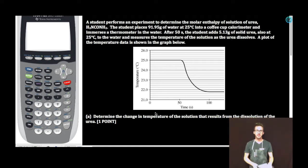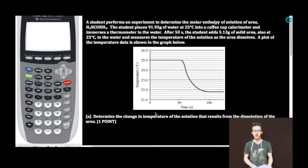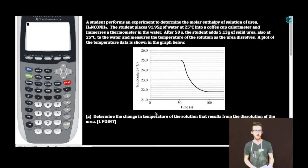A student performs an experiment to determine the molar enthalpy of solution of urea. The student places 91.95 grams of water at 25 degrees Celsius into a coffee cup calorimeter and immerses a thermometer in the water. After 50 seconds, the student adds 5.13 grams of solid urea, also at 25 degrees Celsius, to the water and measures the temperature of the solution as the urea dissolves. A plot of the temperature data is shown in the graph below.